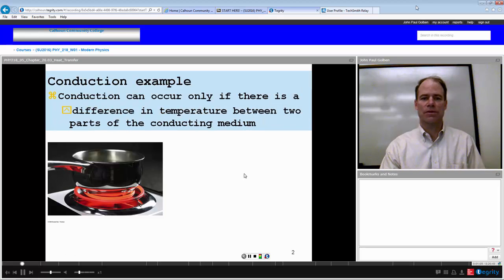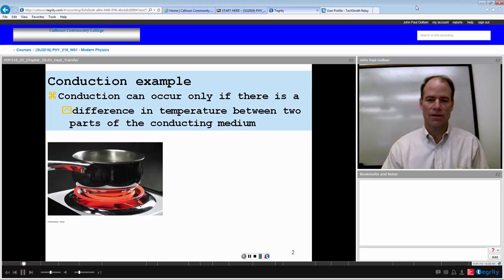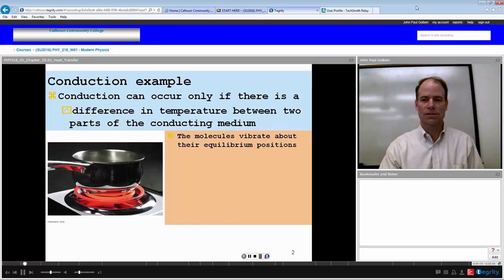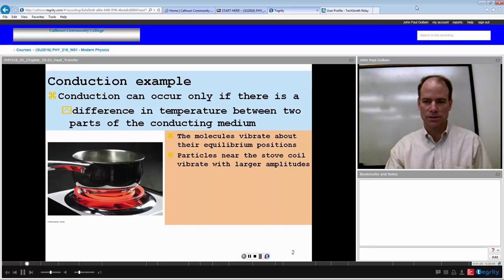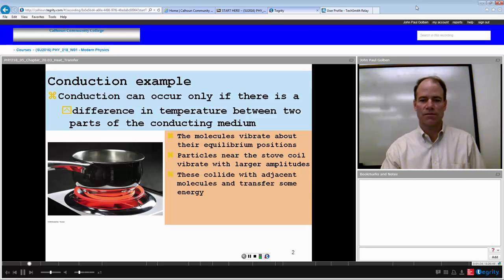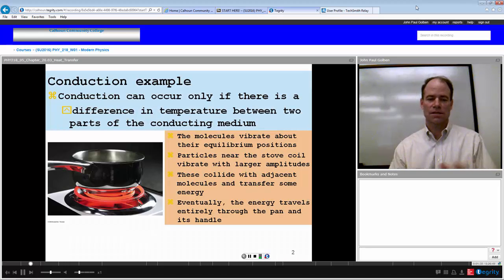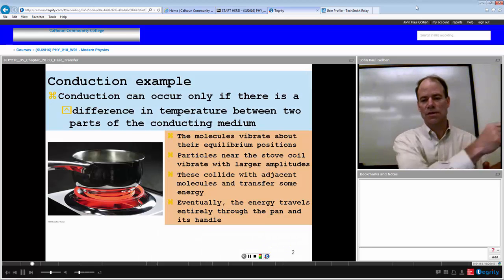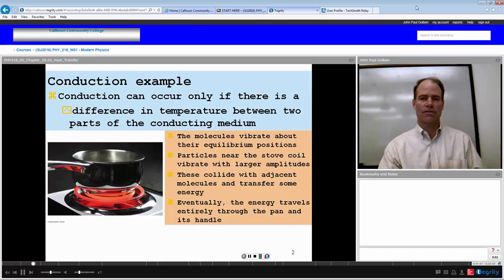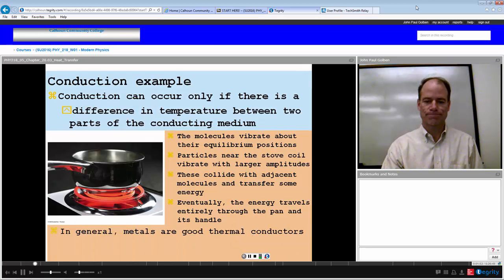Here's a conduction example. Conduction can only occur if there's a difference in temperature between two parts of that conducting medium. In this particular case, the molecules will vibrate more rapidly where the temperature is higher at the stove position, and then they will transfer some of that energy to other molecules nearby within the pan, and they will start vibrating with greater amplitude. As this energy is being transferred along the pan, this energy gets transferred more and more towards the handle, and eventually the heat will travel all the way through the handle.